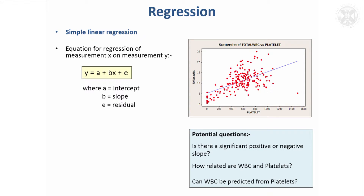The correlation coefficient is a measure of how associated two values are. There's a very closely related technique known as regression, which helps you assess statistically whether those measurements are associated and also quantifies the relationship between the measurements. What regression aims to do is fit the best straight line possible through the data.